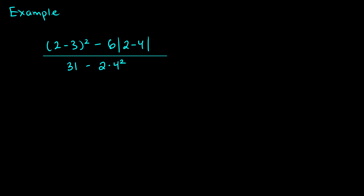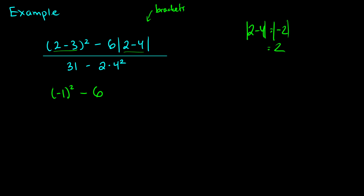Let's do one more example with absolute values. Where do absolute values fit on this list? You can treat them like brackets — focus on them first. I see two brackets here: (2 minus 3) and the absolute value of (2 minus 4). So I focus on these two first. 2 minus 3 is negative 1 — I'm still squaring that. The absolute value of (2 minus 4): 2 minus 4 is negative 2, and the absolute value gives you the positive back. This is distance, so absolute values are always positive.